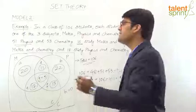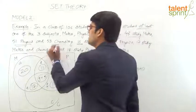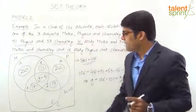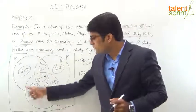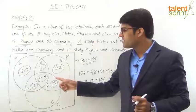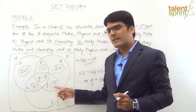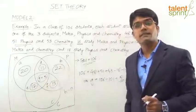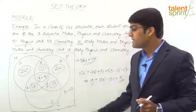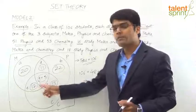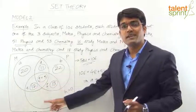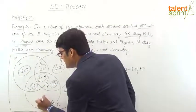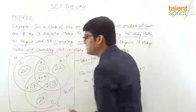For Chemistry (total 53): the already-filled regions are E = 12, F = 13, G = 5. Their total is 12 + 13 + 5 = 30. So the only-Chemistry region c = 53 − 30 = 23.